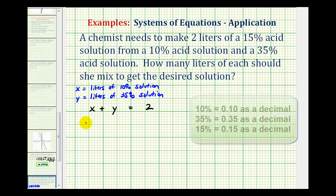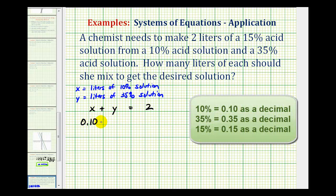0.10x plus 0.35y must equal 0.15 times the total amount of solution, which is two liters. So 0.10x plus 0.35y equals 0.15 times 2.